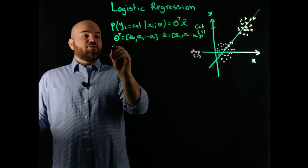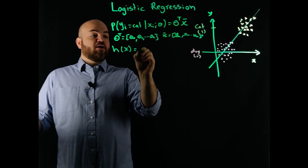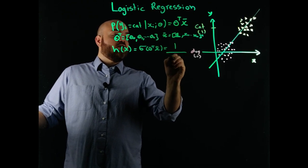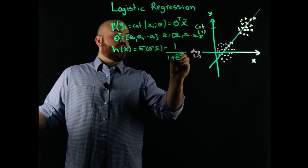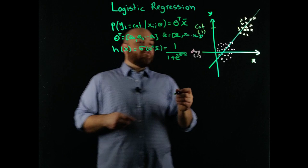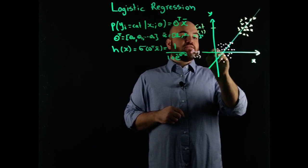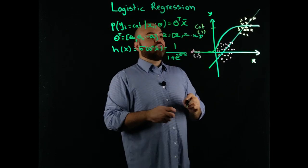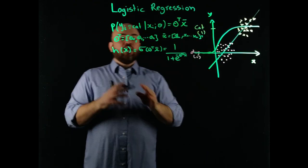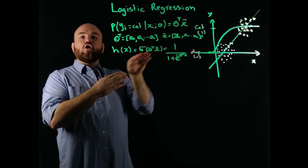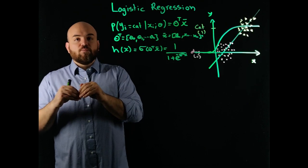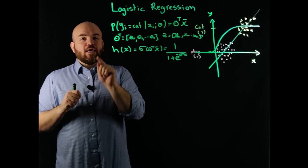So I make my hypothesis h of x equal to sigma of theta transpose x-bar, where that function sigma is a sigmoid function, equal to 1 over 1 plus e to the negative theta transpose x. I pick the sigmoid for two reasons. First, the sigmoid starts at 0 and ramps up to 1 — it's bounded and cannot be larger than 1 or less than 0. Second, the derivative of a sigmoid is mathematically convenient, as we'll find out in just a few minutes.